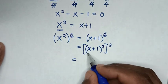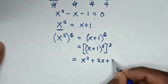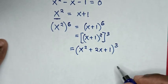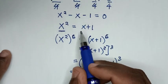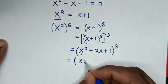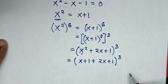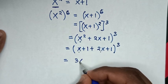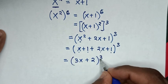Then it will be equal to — we'll expand this — it will be (x squared plus 2x plus 1), then bracket to the power of 3. Then from x squared, in here x squared is x plus 1, so substitute here: it will be bracket (x plus 1 plus 2x plus 1) to the power of 3. Then x plus 2x is 3x, and 1 plus 1 is 2, so it will be (3x plus 2) to the power of 3.